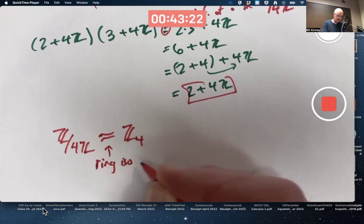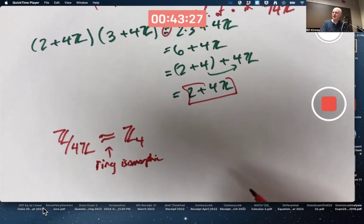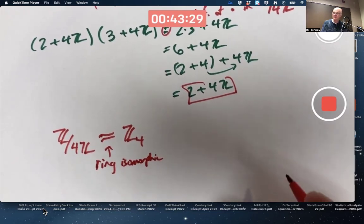There's a concept of ring isomorphism. There's also a concept of ring homomorphism. It's the next chapter, chapter 15.